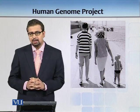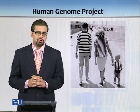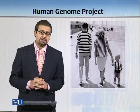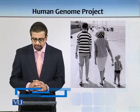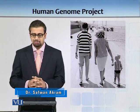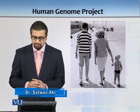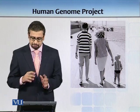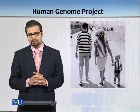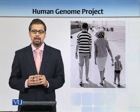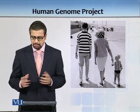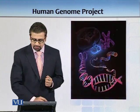We knew certain things before the start of the Human Genome Project. For example, that a child gets part of his DNA from mother and father. This is illustrated by a lovely image where the father is wearing a horizontal striped shirt, the mother is wearing vertical pinstripes, and the child has a crisscross pattern.